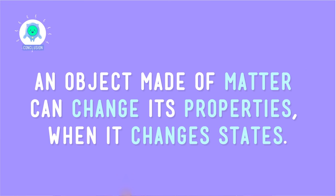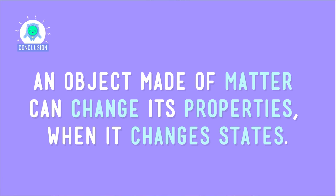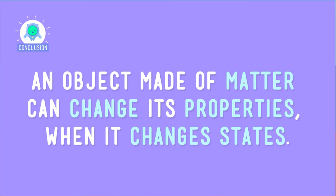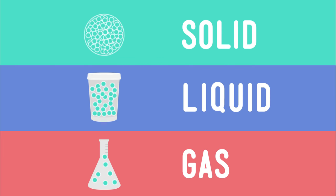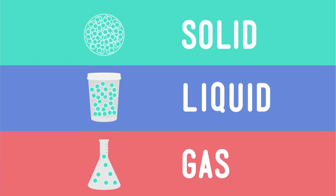An object made of matter can change its properties when it changes states. And remember, it doesn't make a difference which state of matter an object is in — solid, liquid, or gas — it still always matters. To sum up: matter is everywhere, matter is made of particles, therefore particles are everywhere. So, like I always say, never trust a particle — they make up everything.